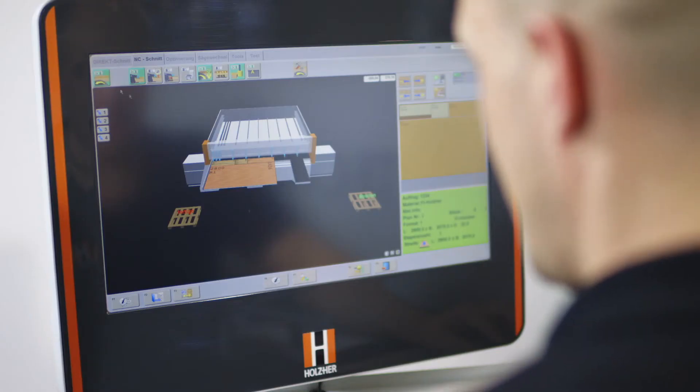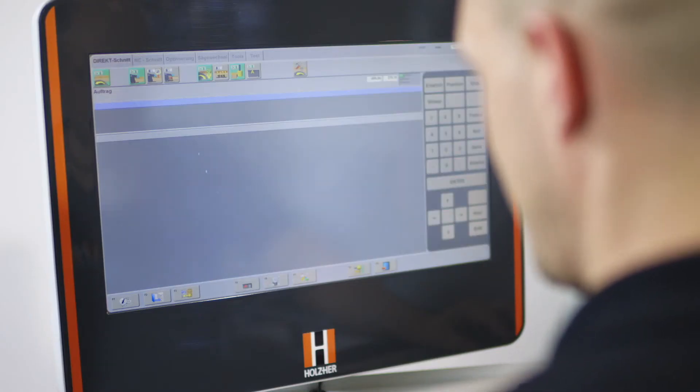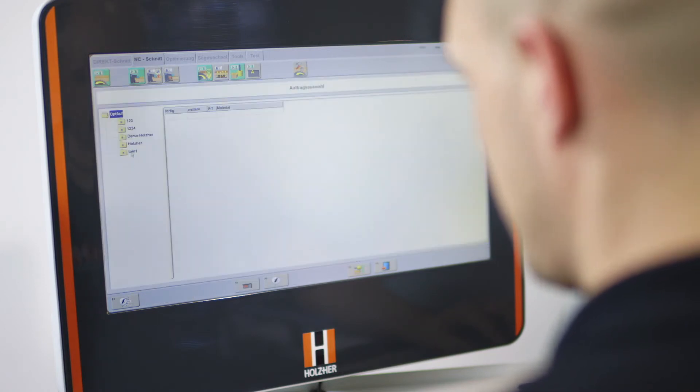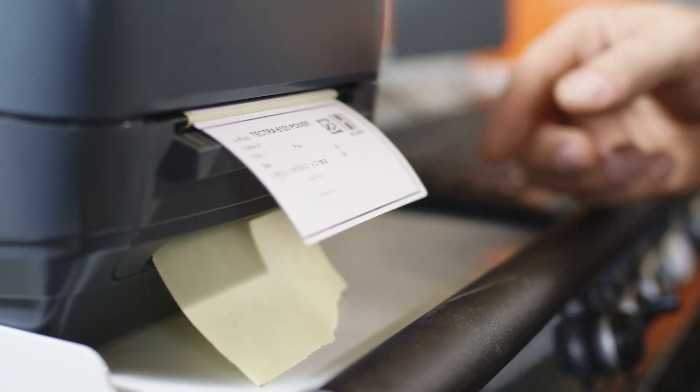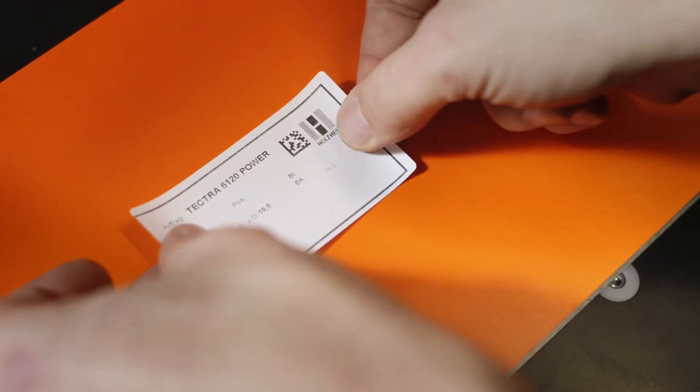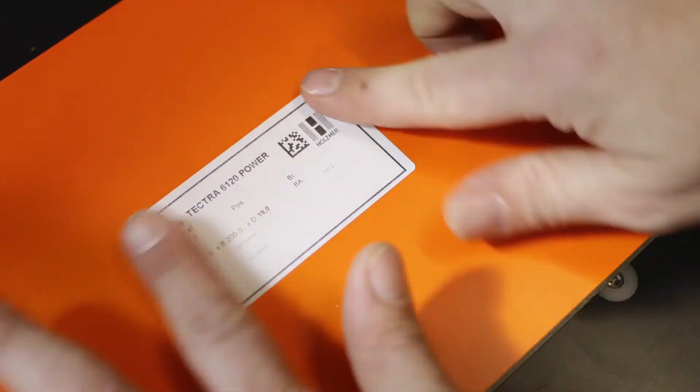In addition to important operator information on the job, the software can also optimize material flow downstream of the saw. Workpieces can be marked with barcode labels containing program information for CNC machines, edge banders and much more.